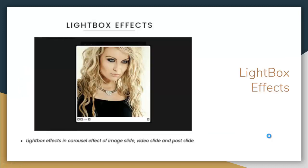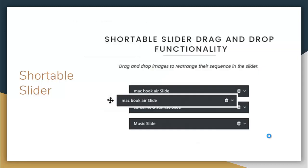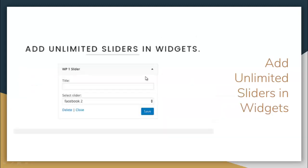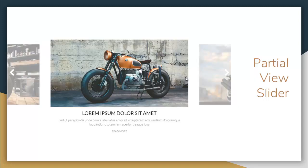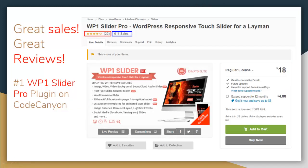You also get a lightbox effect and a sortable slider feature so you can drag and drop to rearrange your sliders. You can add unlimited sliders in the widget and get six different transition effects, as well as a partial view slider feature.